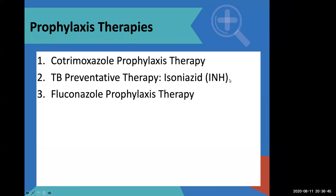Then the question is: does she qualify for TB preventive therapy? Can we give her drugs to help her not get TB? Yes — because we will screen her for TB. If she does not have symptoms or signs of TB, and we assess for contraindications to isoniazid like rash or painful feet, if she doesn't have any, then she qualifies for isoniazid 300 mg per os daily for 12 months.